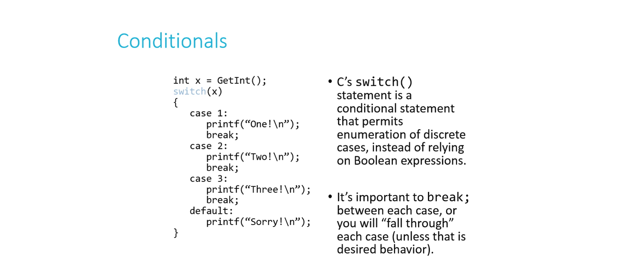So int x equals get_int. Basically, what's happening is I'm at the terminal. I'm asking the user to type in a number. And here, I'm switching what I'm doing depending on what the user typed at the prompt. So if they typed 1, I print out 1, and then I break. If they typed 2, I print out 2, and then I break.